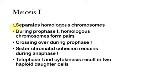Meiosis I is the process that separates homologous chromosomes from each other. You saw in that first slide how the homologous chromosomes will actually pair up with each other — this happens during prophase I. During prophase I is when that crossing over will occur and they'll exchange different segments, allowing for greater genetic versatility.